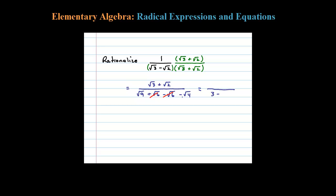No more radical in the denominator, and that's the goal. In the numerator we're left with square root of 3 plus the square root of 2.